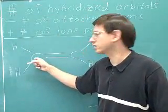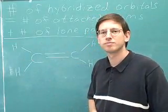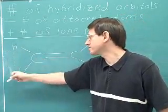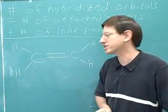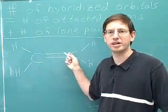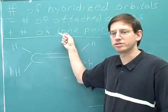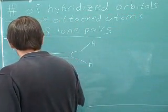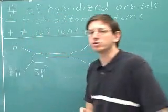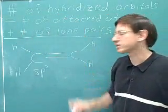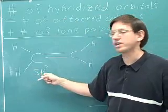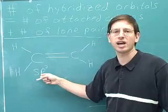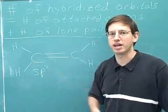What's the hybridization of this carbon? There are three attached atoms — a hydrogen, another hydrogen, and this carbon over here — and no lone pairs. Three plus zero is three, so we should have only three hybridized orbitals. This carbon is sp2: one s orbital and two p orbitals gives us three hybridized orbitals overall.